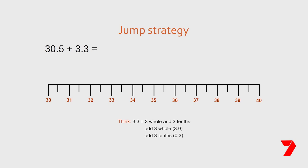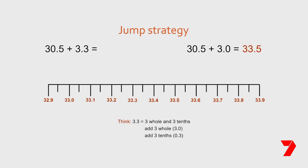Three and three tenths equals three ones and three tenths. First we will add the three ones and then we will add the three tenths. We are adding three and three tenths to thirty and five tenths, so let's locate thirty and five tenths on our number line. Count on three ones: thirty and five tenths add three whole equals thirty-three and five tenths. Now add the three tenths, giving us an answer of thirty-three and eight tenths.